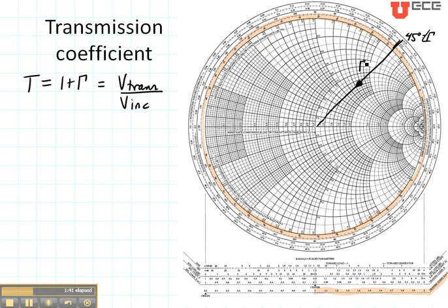I can also find the transmission coefficient from that same point. And what I do is I read off the angle of the transmission coefficient. So you can see here it is 10, 15, 20, 25. Looks like the angle of the transmission coefficient is about 22.5 degrees in this example.